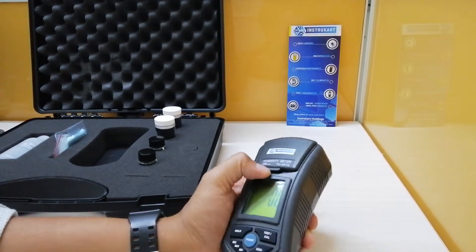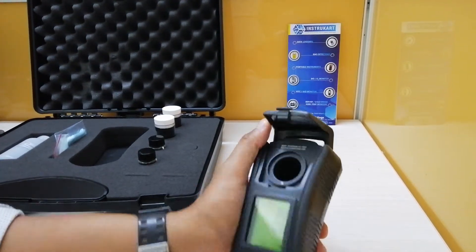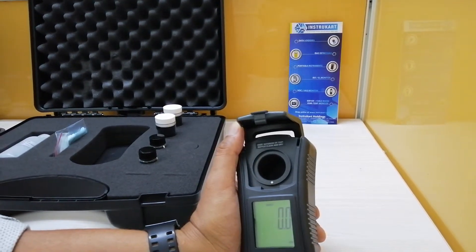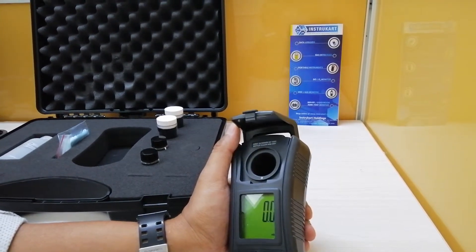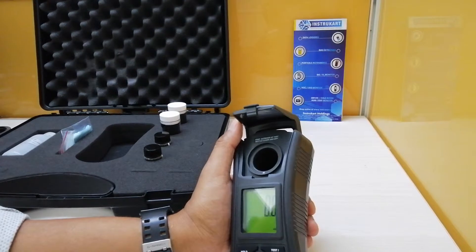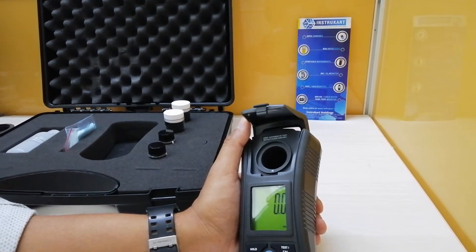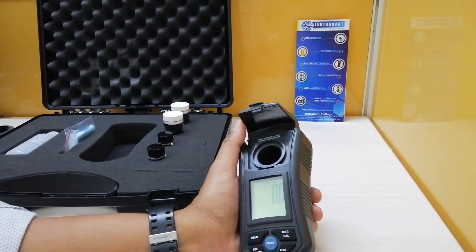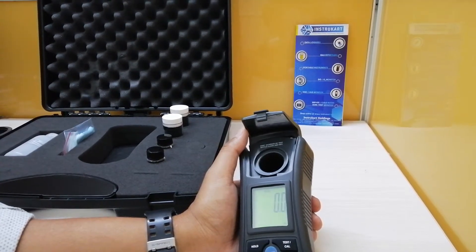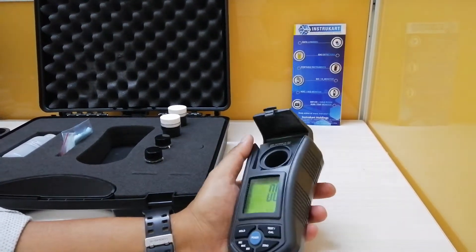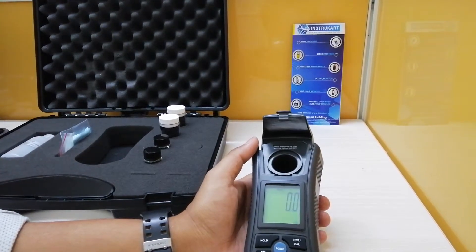To do that we need the sample volume of minimum 10 ml. Other features include the data hold facility, memory recall, and the display sampling time is approximately one second. The calibration points are between 0 NTU and 100 NTU.